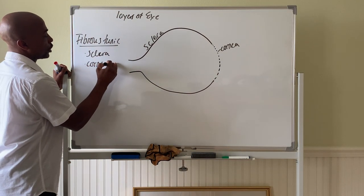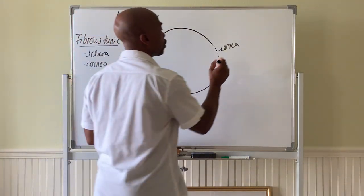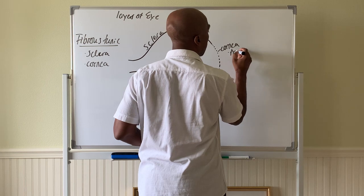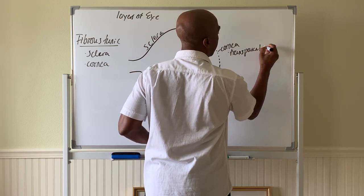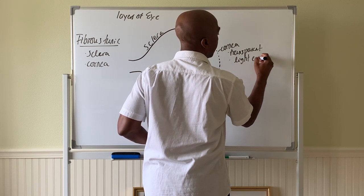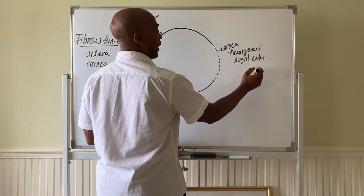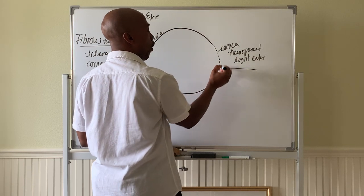The cornea is the part that you put your contact lens on. Okay, so this part is transparent which means it allows for light to enter the eye.